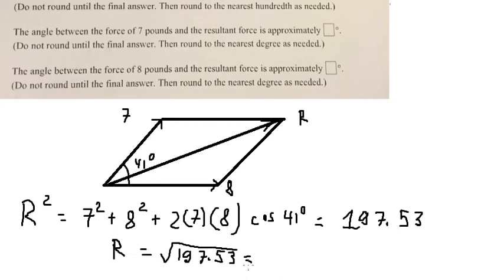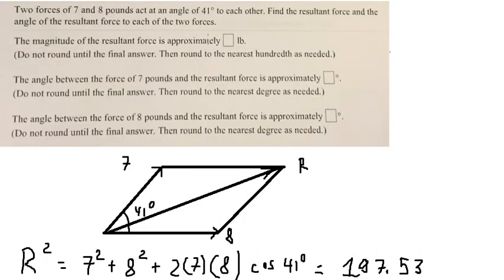This gives us 14.05 here, so we can write the answer. Question number two: we need to find the angle between the force of seven pounds and the resultant force.